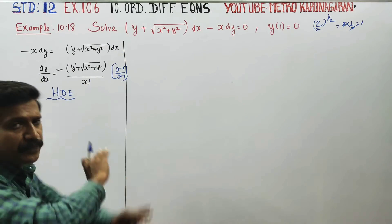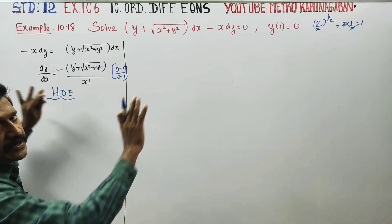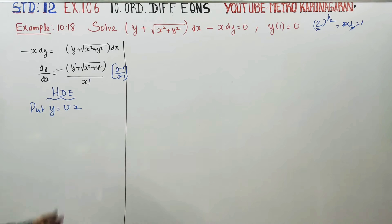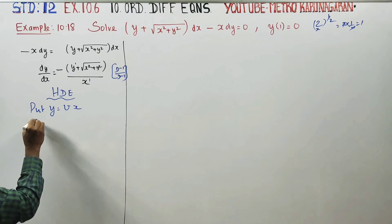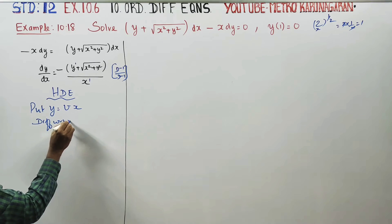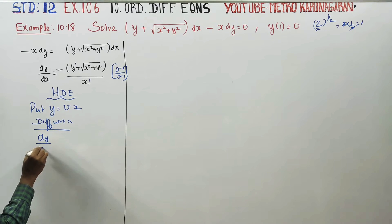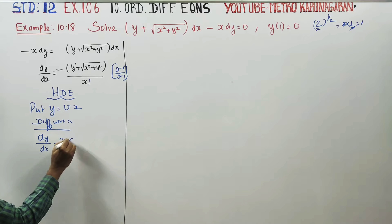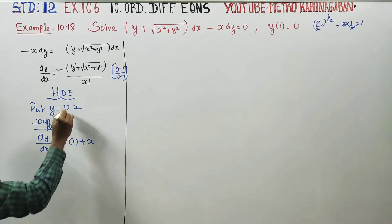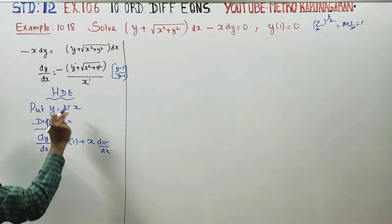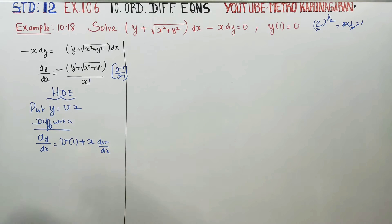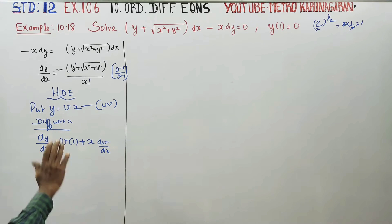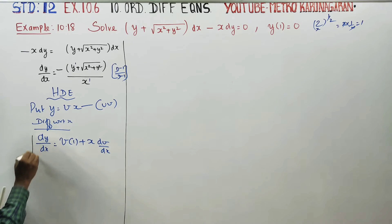For a homogeneous differential equation, substitute y equal to vx — use this concept and substitution. Differentiate with respect to x: dy by dx, using the uv formula. Differentiate v: get v plus x dv by dx.